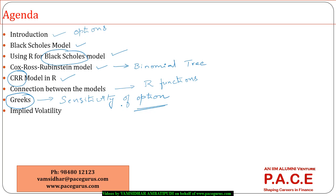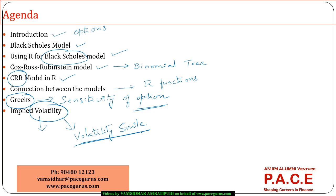We'll look at how the option price changes when time to maturity changes. We'll compute the Greeks and understand the importance of each on the price of the option. Towards the end, we'll cover the concept of implied volatility, generate implied volatility based on options associated with some stocks, and produce what we call the volatility smile — covering both technical understanding and implementation in R.